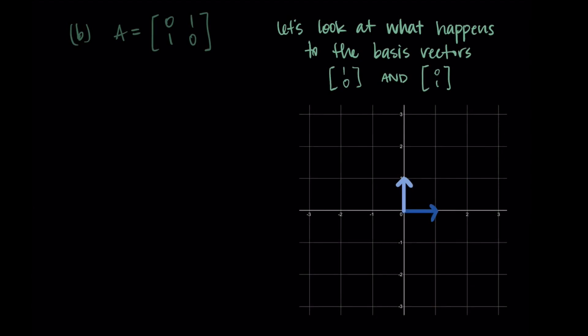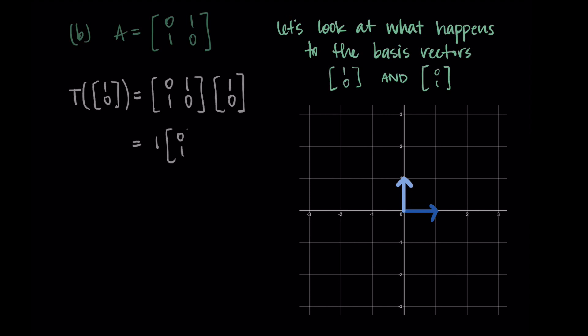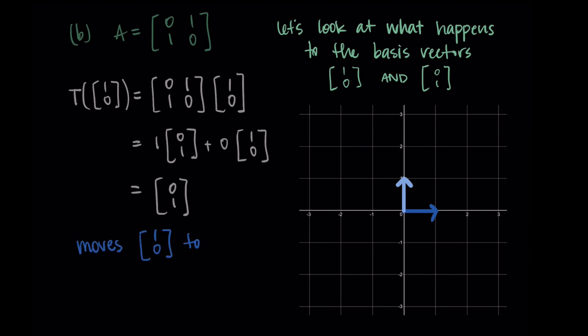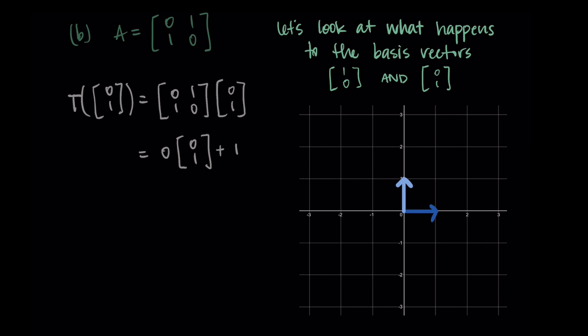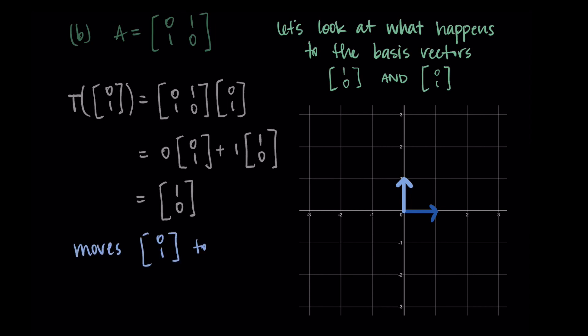For our next matrix, the first column is (0, 1) and the second column is (1, 0). Again, we look at what happens to the basis vectors. When we input the first basis vector (1, 0), we take 1 of the first column plus 0 of the second column, which gives us just that first column. So the transformation moves the vector (1, 0) to the vector (0, 1). When we input the second basis vector (0, 1), we take 0 of the first column plus 1 of the second column, giving us (1, 0). So the transformation moves (0, 1) to (1, 0) — the two basis vectors are switching positions.